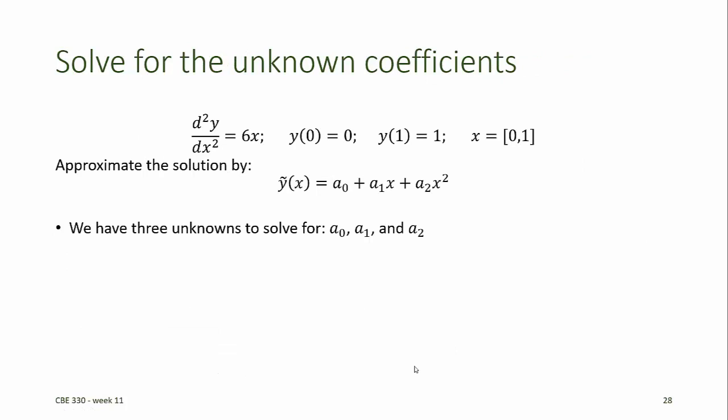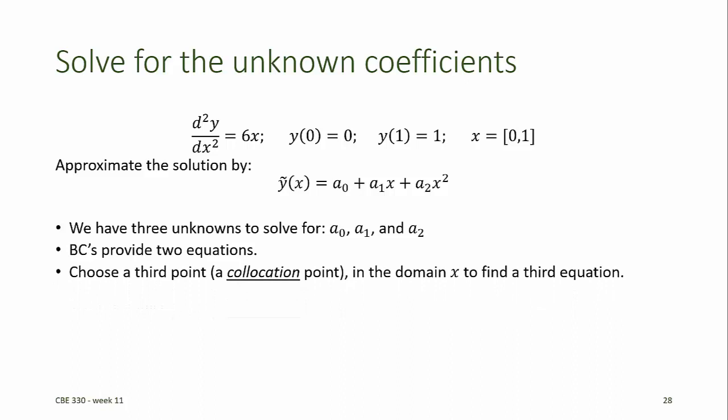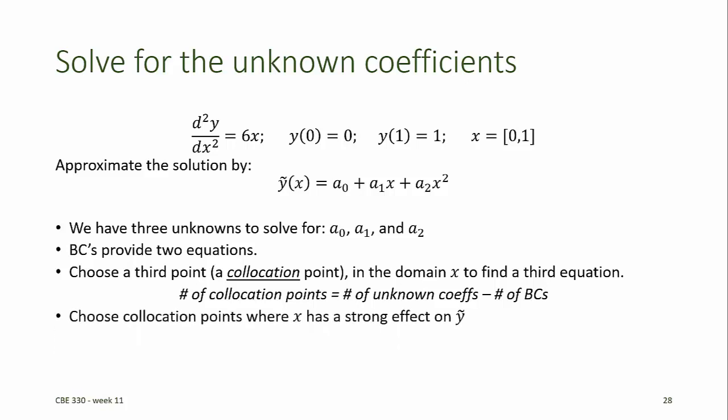Now we have three unknowns to solve for: a0, a1, and a2. The boundary conditions provide us with two equations and we choose a third point called the collocation point somewhere in the domain of x to find a third equation. The number of collocation points that we need is equal to the number of unknown coefficients minus the number of boundary conditions. We should choose collocation points where x has a strong effect on our approximating function y-tilde, and then at the collocation points we impose the defining equation to obtain additional equations to solve for our unknown coefficients. In this case, we need only one collocation point because we have only one remaining unknown coefficient.